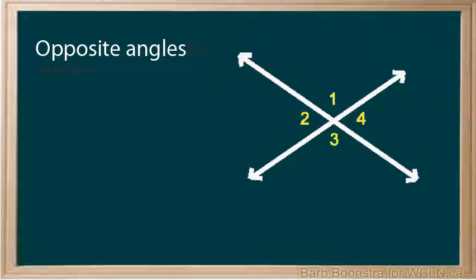When two lines intersect, they form two pairs of opposite angles: angle 1 and angle 3, and angle 2 and angle 4.